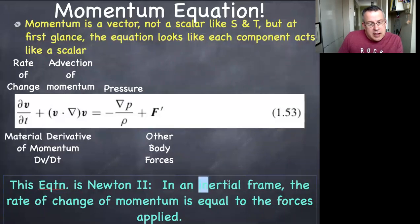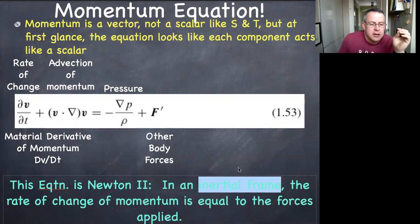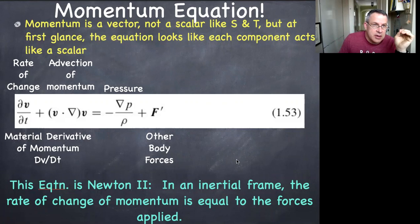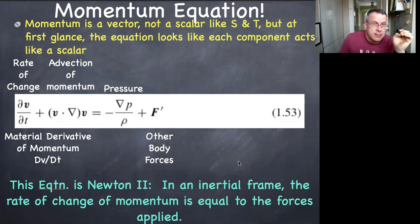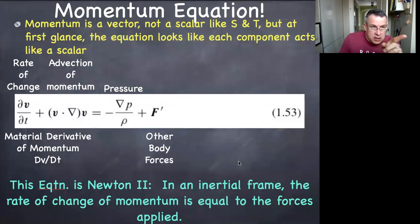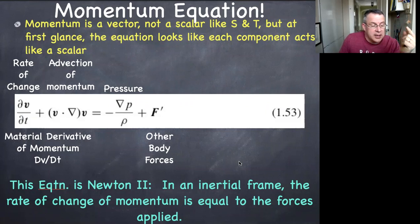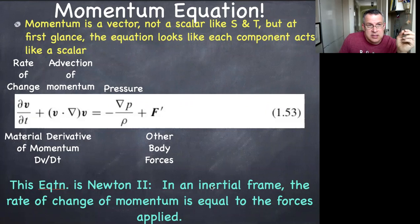'In an inertial frame' is a phrase you might skip over quickly. An inertial frame is a frame moving at a constant velocity — not just constant speed, but constant velocity. A rotating coordinate system may be rotating at a constant speed, but it is definitely not traveling at a constant velocity. The angle of rotation is changing continuously, so that frame of reference is not actually an inertial frame.